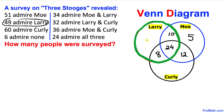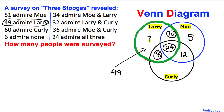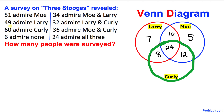Now let's focus on the 49 that admire Larry. In the Larry region we already have 8 plus 24 plus 10, which adds up to 42 people, so we add just 7 more. Adding all values in the Larry region gives us 49.